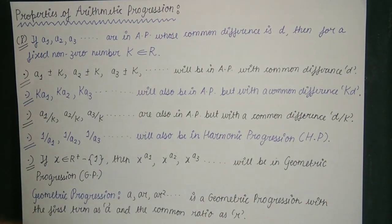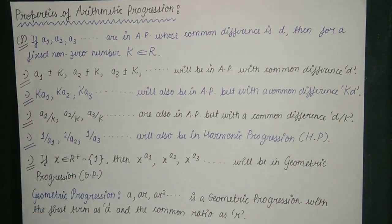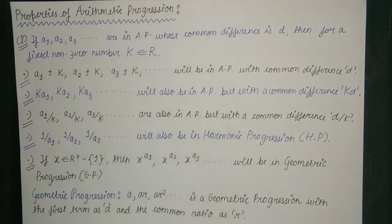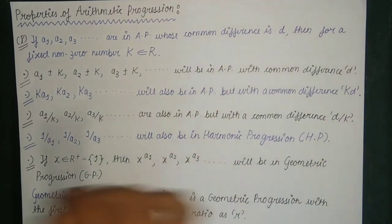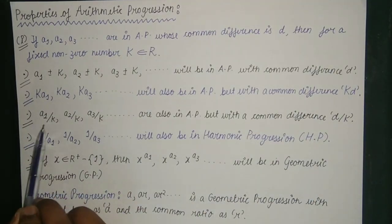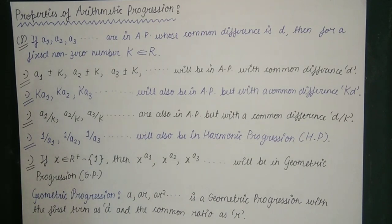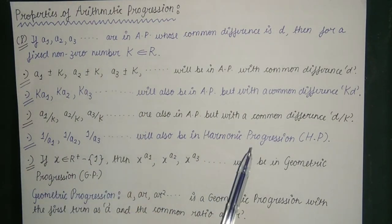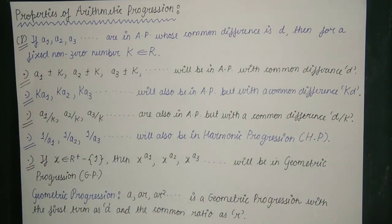The sequence ka1, ka2, ka3 till kaN is also in AP, but this time the common difference is not d — it is kd. The series a1/k, a2/k, a3/k till aN/k is also in AP, but this time the common difference is not d, nor k/d — it is d/k.